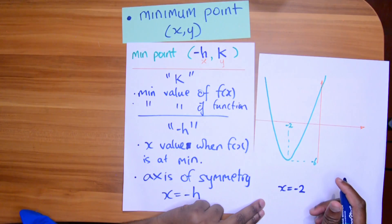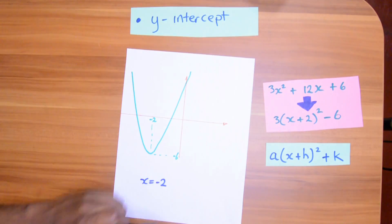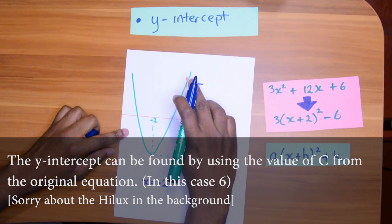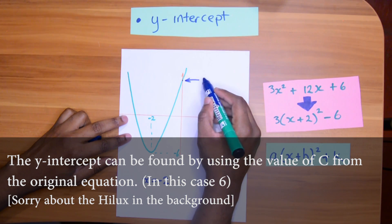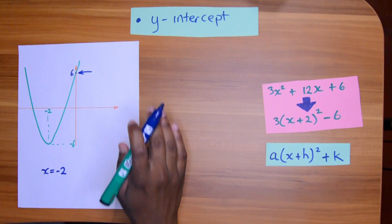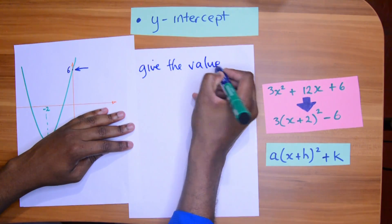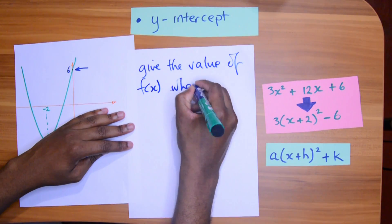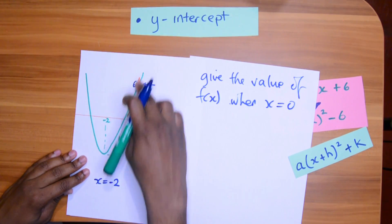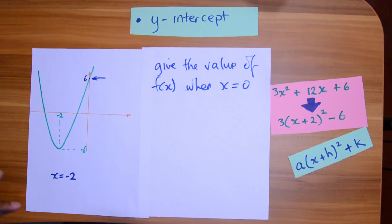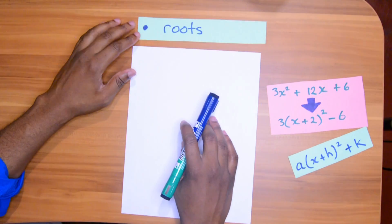The next thing you can be asked is for the y-intercept. The y-intercept is simply the spot where the graph cuts the y-axis, and in this case the value is 6. A clever way they can ask for the y-intercept is: give the value of f(x) when x = 0. When x = 0, the value of f(x) is 6. Mostly they'll say 'state the y-intercept.'